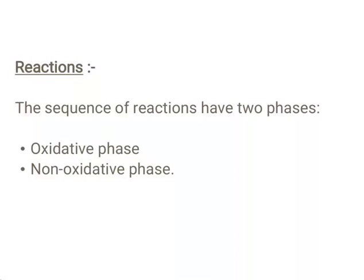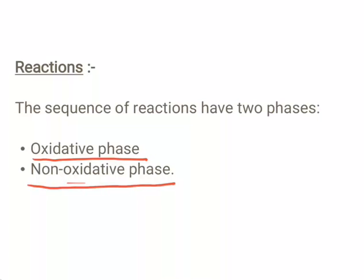Let us have a look at the reactions of HMP shunt. The sequence of reactions has two phases: the oxidative phase and the non-oxidative phase. In the oxidative phase, the starting material glucose-6-phosphate undergoes multiple reactions and forms ribulose-5-phosphate. In the non-oxidative phase, the reactions are concerned with the interconversion of 3, 4, 5, and 7 carbon monosaccharides.